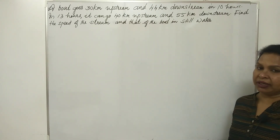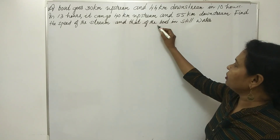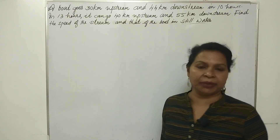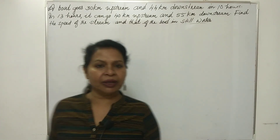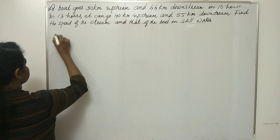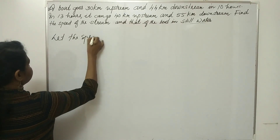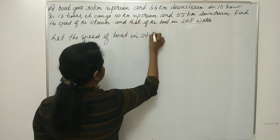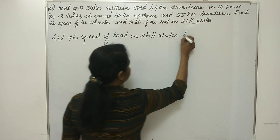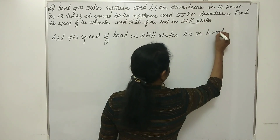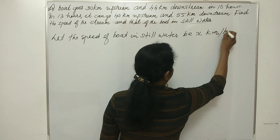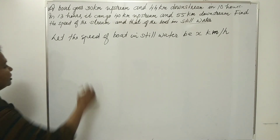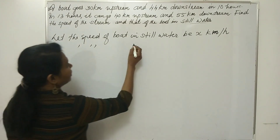That's why we have two variables. One is the speed of the boat in still water, and two is the speed of the stream. Let the speed of the boat in still water be x km per hour, and the speed of the stream be y km per hour.